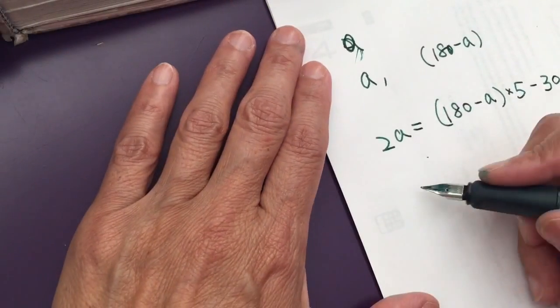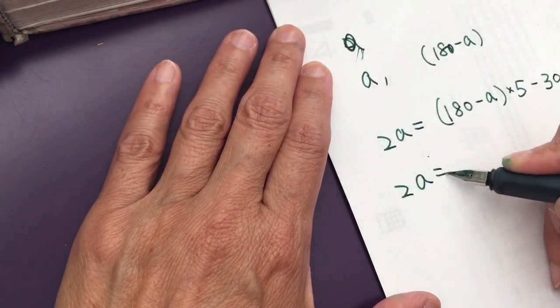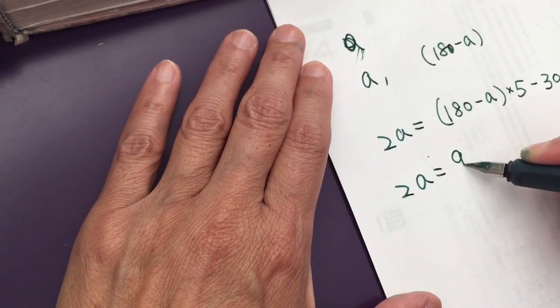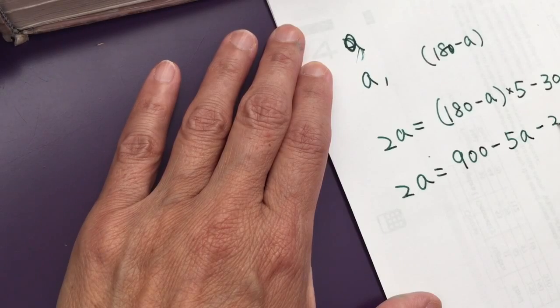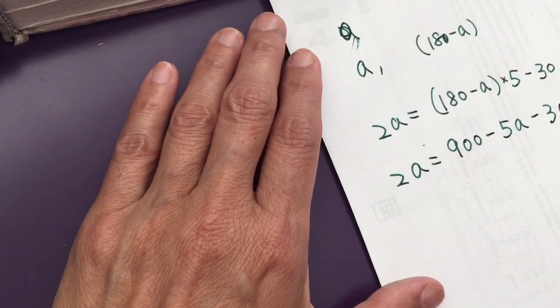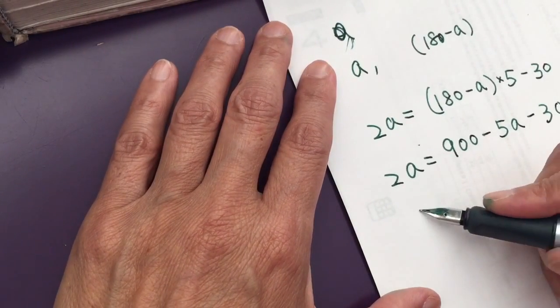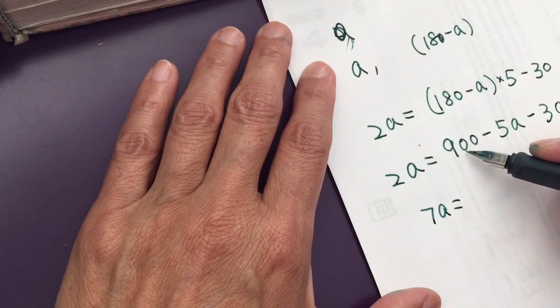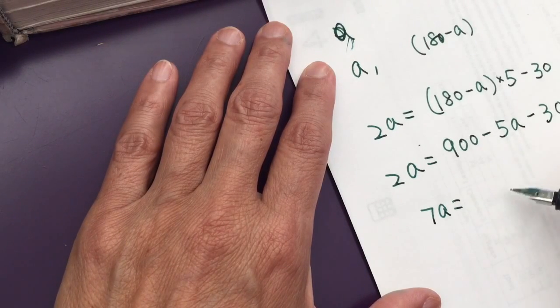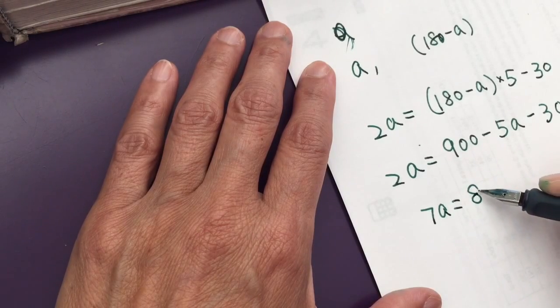2A equals 900 minus 5A minus 30. Make sense, right? So 7A equals 900 minus 870.